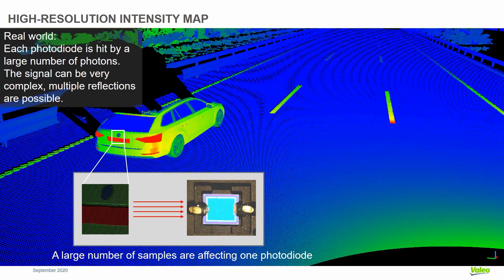Now using this intensity calculation, we want to construct the signal that the sensor is usually generating. In the real world, there are a lot of photons which are hitting the LiDAR sensor, and each photodiode will be affected by a large number of photons.